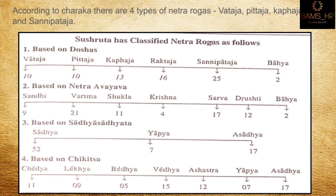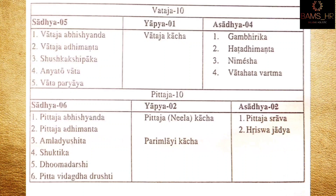Based on chikitsa and shastra vidya according to Sushruta: chedya 11, lekhya 9, vedya 5, bhedya 15, Sushruta karma 12, yapya 7, and sadhya 17. Just remember it.